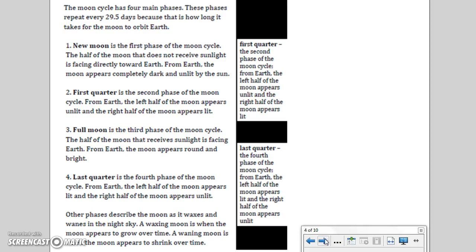Other phases describe the moon as it waxes and wanes in the night sky. A waxing moon is when the moon appears to grow over time. A waning moon is when the moon appears to shrink over time.